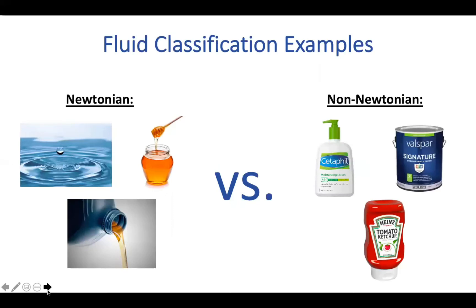When it comes to Newtonian fluid examples, the most relevant ones that usually come to mind are water, honey, and motor oil. When mixing each of these, the viscosity usually remains constant.